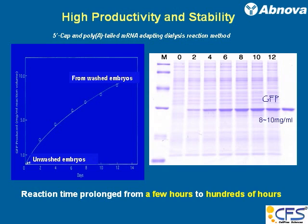When you use extract made from unwashed embryos, it lasts only a matter of minutes or hours. But if you make extract from washed embryos, the translation reaction continues — in this case, 12 days. The experiment was stopped there because fungus began to develop, not because the system became unstable. As you see, the model protein GFP is continuously produced at a stable level over time.